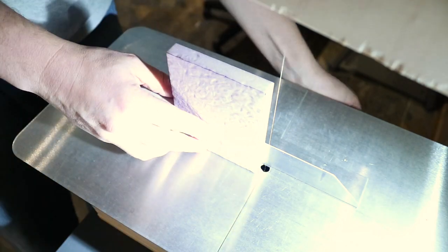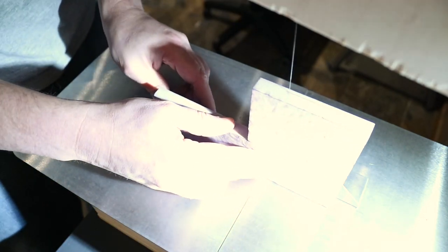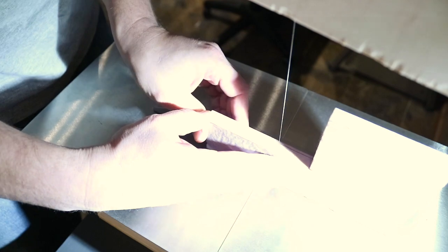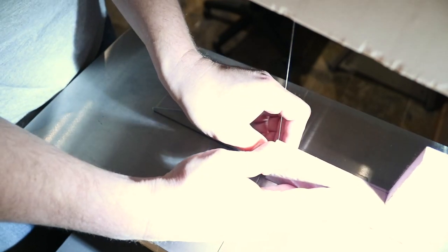I'm setting up the guide to just take a sliver off of the roof section. This will be used as the floor for the interior.